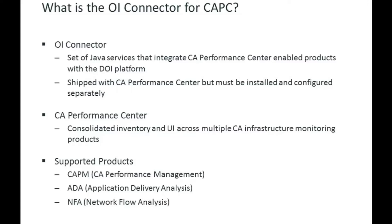There is a requirement of CAPC 3.5 or higher. A version check happens when the component starts. The OI Connector queries CAPC to make sure it has a version suitable for operation, and if that version is below 3.5, it will exit with an error in the log file indicating it did not find a suitable version of CA Performance Center.